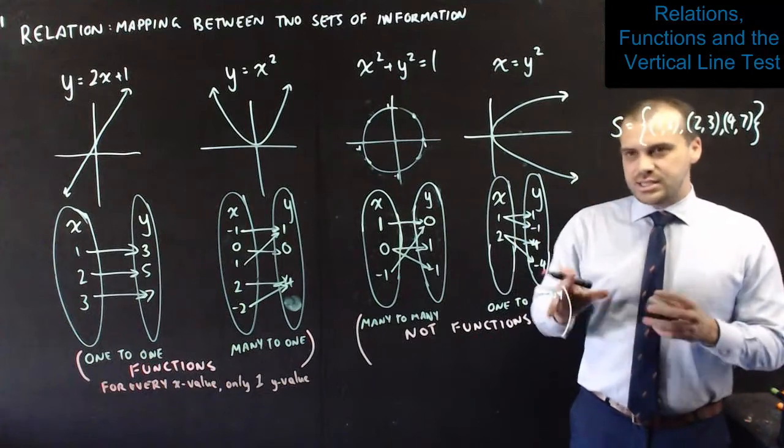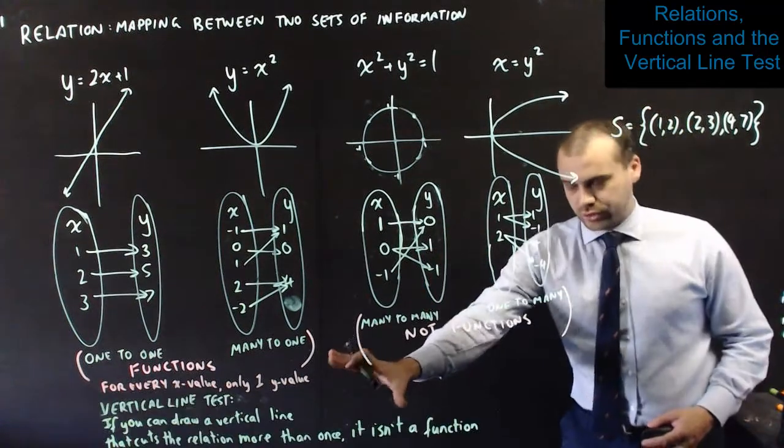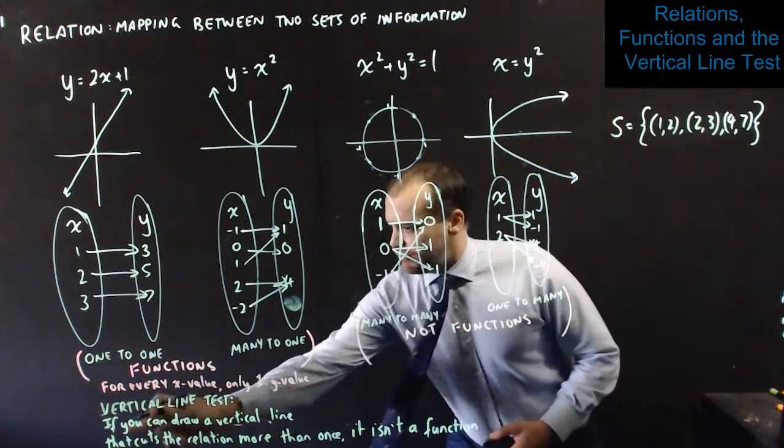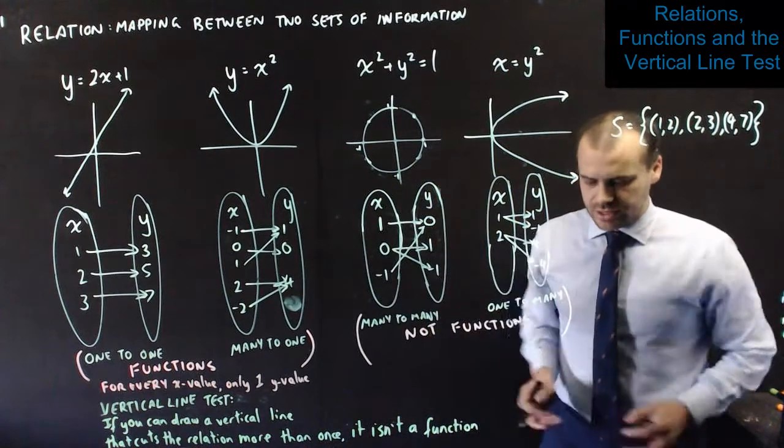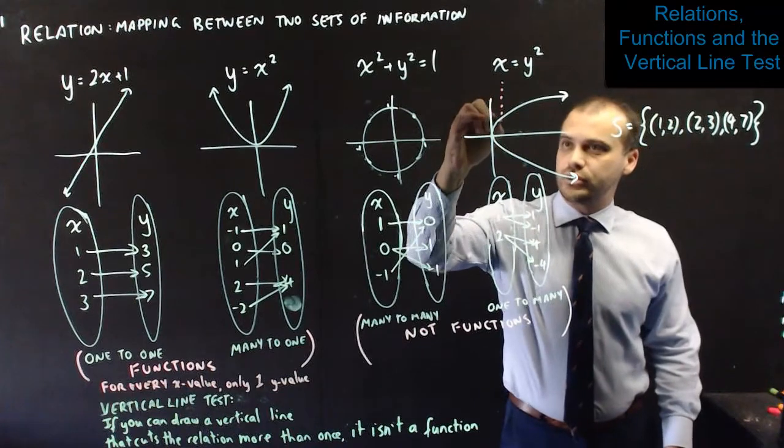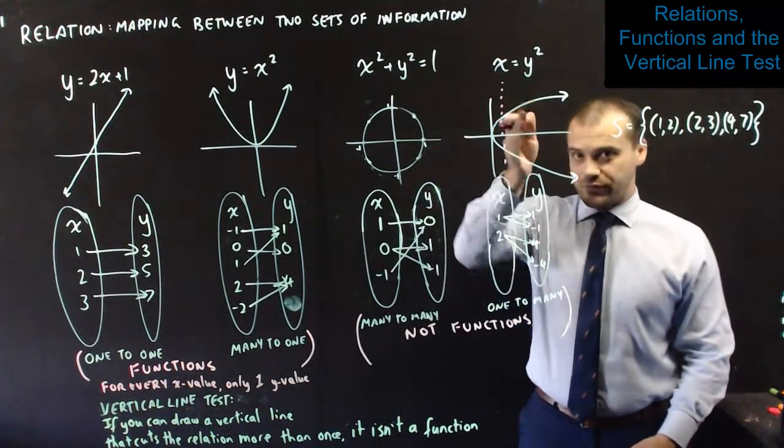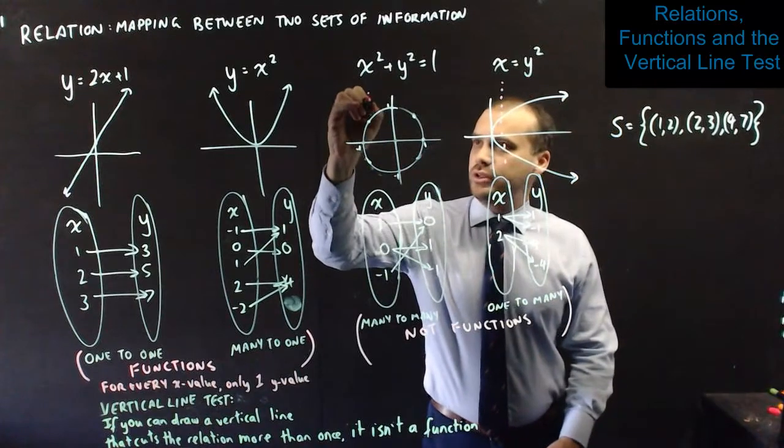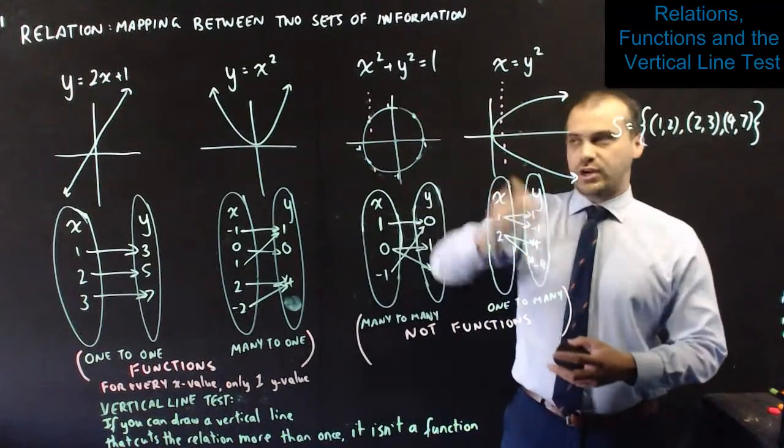That's why they're not functions. But, there's a very easy way to tell whether something is a function or not: the vertical line test. If you can draw a vertical line that cuts the relation more than once, it isn't a function. For example, with this one, I can draw a vertical line. Oh, wait a minute. It's cutting it twice. Not a function. A vertical line. Oh, it's cutting it twice. Not a function.